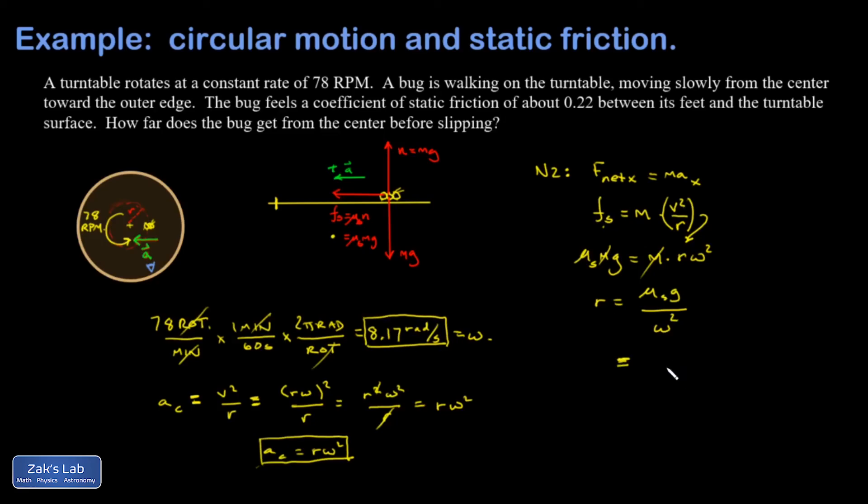I'll go ahead and plug in. Mu s is 0.22, g is 9.8, omega is 8.17. And I get 0.0323. Well, I could call it 3.23 centimeters. So that's the point at which the force required to maintain the centripetal acceleration has exceeded the maximum static friction force. And the bug is going to fly off of the disk, start slipping.